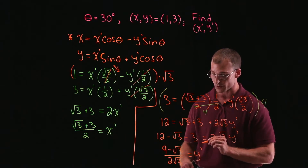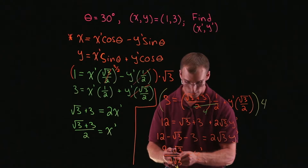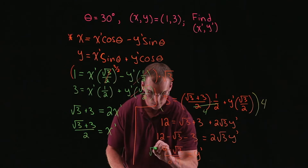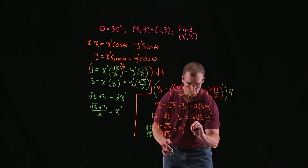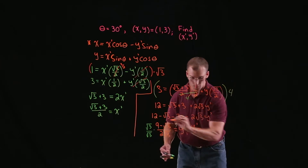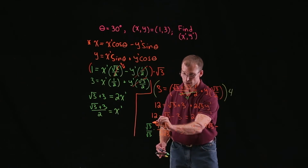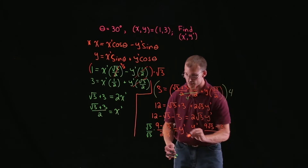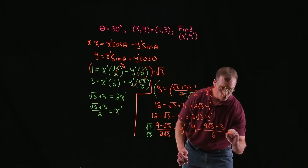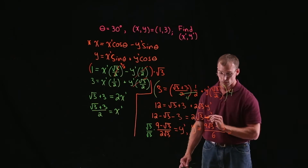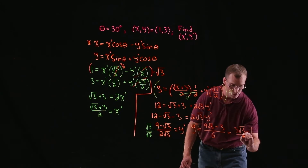We're almost there, but we can simplify a little bit by rationalizing our denominator — multiplying top and bottom by root 3. That gives us 9 root 3 minus root 3 times root 3, which is 3, in the numerator; and root 3 times root 3 is 3, so 2 times 3 is 6 in the denominator. We can factor a 3 out of the numerator and denominator, and the 3s cancel, giving us 3 root 3 minus 1 over 2.